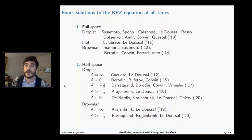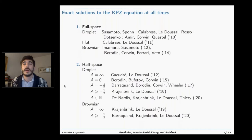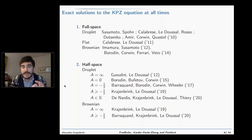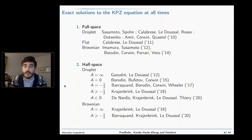The first explicit solutions to the equation appeared around 2010. The first for the droplet initial condition came simultaneously from five groups: Sasamoto and Spohn; Calabrese, Le Doussal, and Rosso; Dotsenko; and Amir, Corwin, and Quastel. After the droplet case, other conditions were studied — the flat one, then the Brownian one, first from physicists and then more rigorously by mathematicians. Concerning the half-space results, it's more recent because there are technicalities not present in the full-space case. So far only two initial conditions were studied: the droplet one and the Brownian one. People first needed specific boundary conditions — specific values of parameter A, first plus infinity and zero, then minus one-half — and more recently we've been able to generalize this, up to the solution we found for the Brownian initial condition with Guillaume Barraquand and Pierre Le Doussal a few months ago.